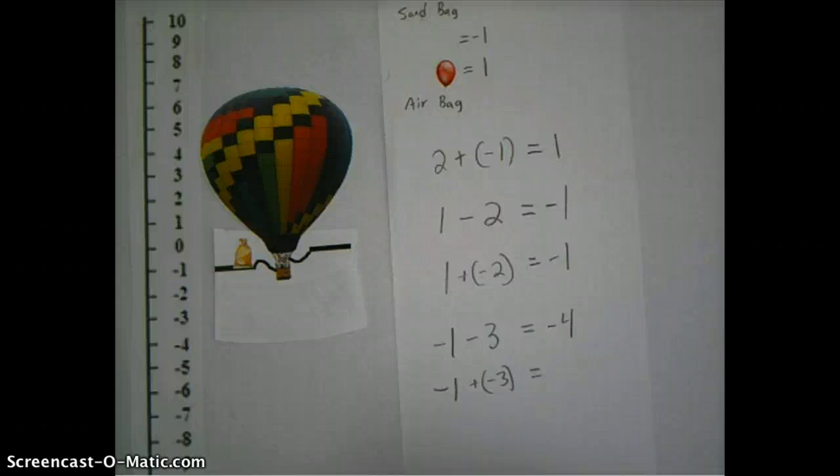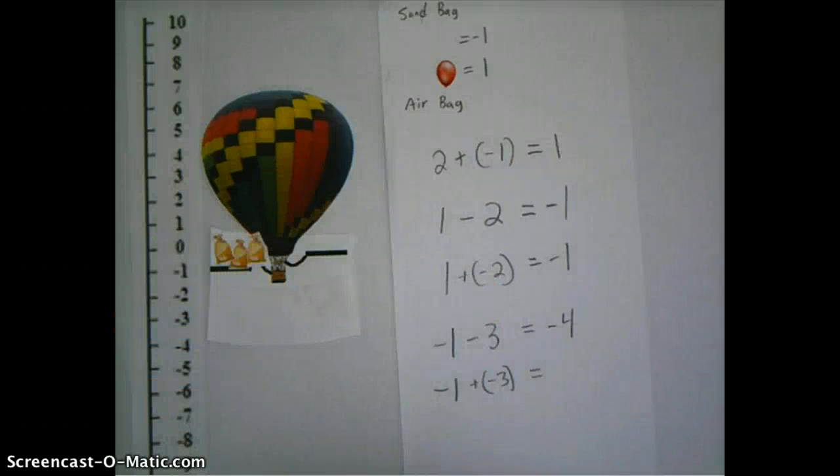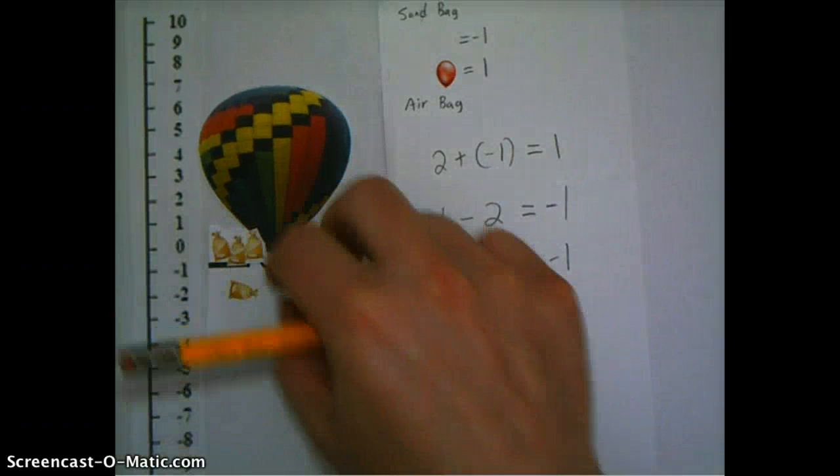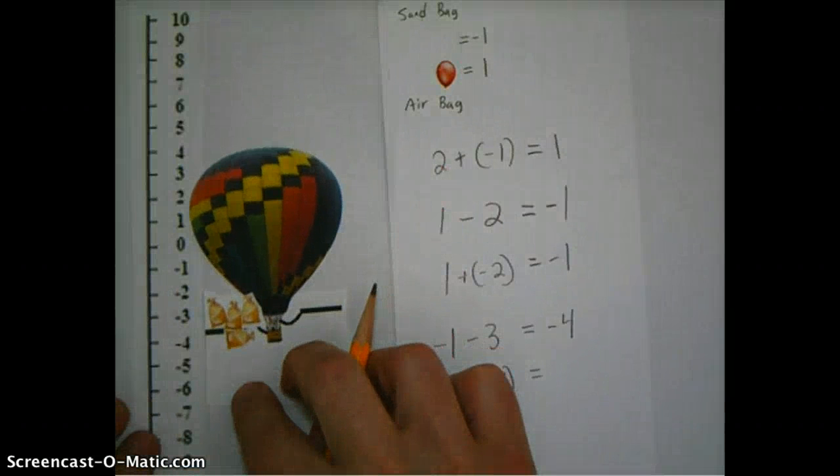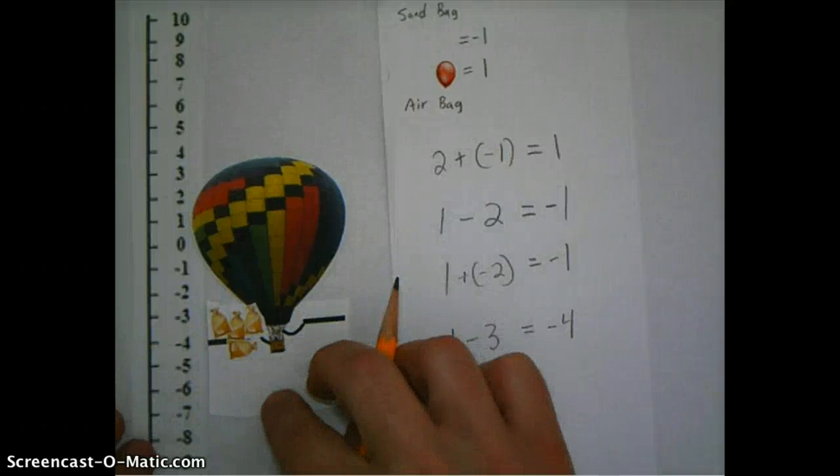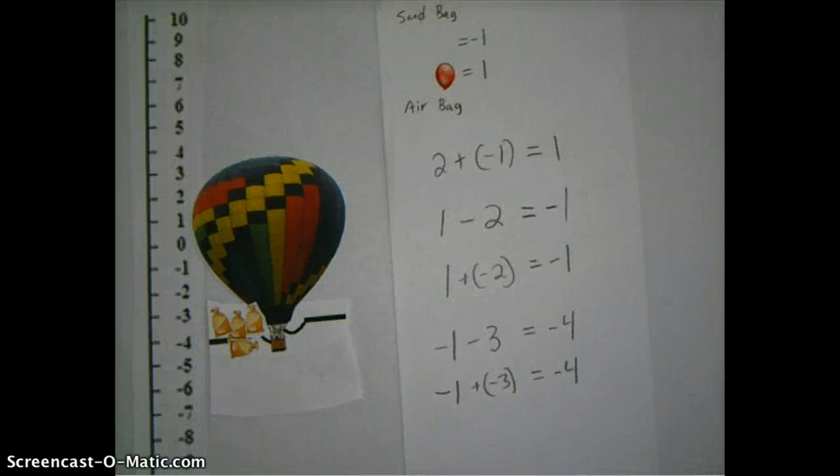And I'm adding minus three. In other words, I'm adding three sandbags to it. And I've added three sandbags on there. And all right, so now, I'm going to ask you to use these particular, this model of a airbag and a sandbag to, and the balloon model of the integers to think about, and for your homework, to think about how integers work together to answer some questions.